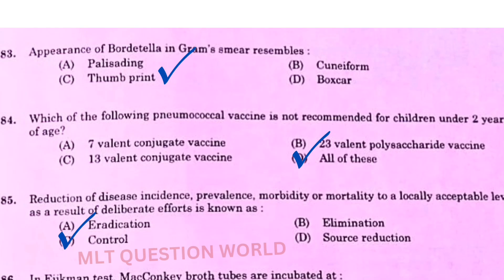Next one: Appearance of Bordetella in gram smear resembles — the right answer is option C, thumbprint appearance. Next: Which of the following pneumococcal vaccine is not recommended for children under 2 years of age? The right answer is option D, all of these.